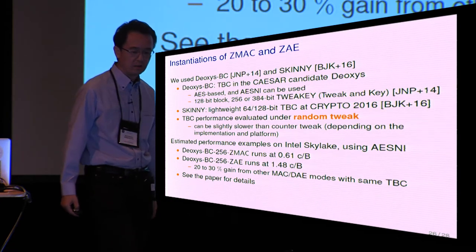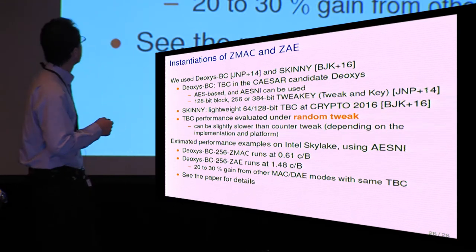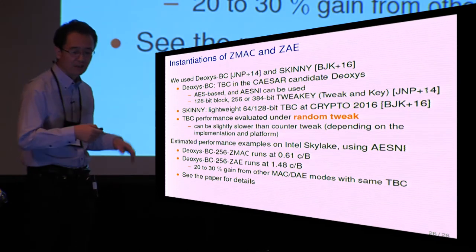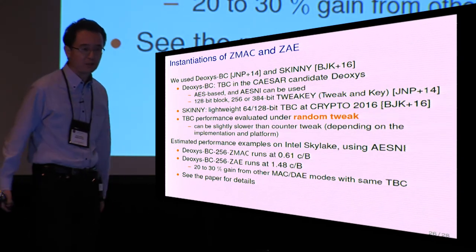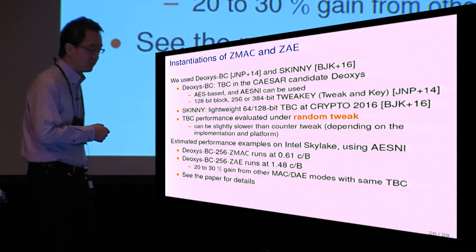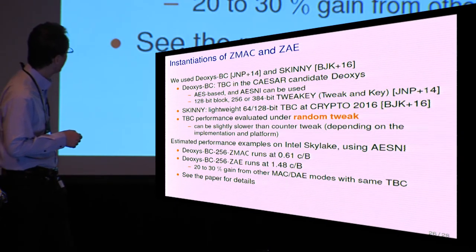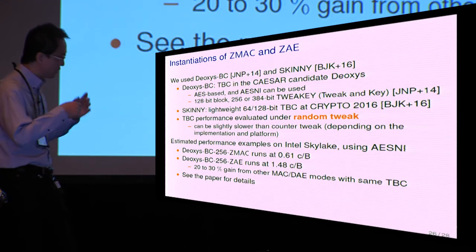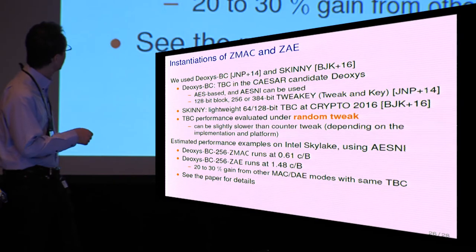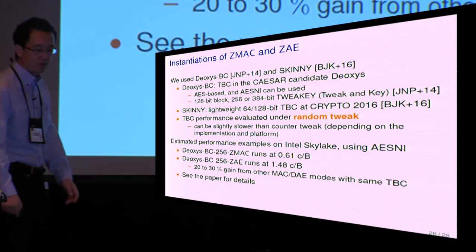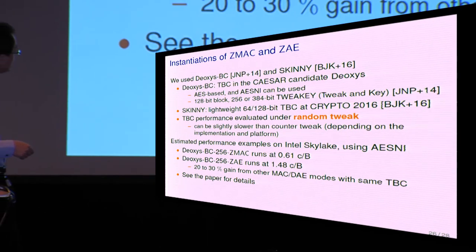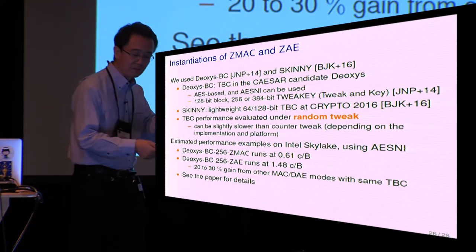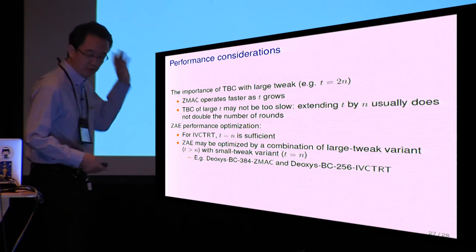We also instantiate ZMAC and ZAE using dedicated existing TBC. We choose Deoxys-BC and Skinny, where Deoxys-BC is a TBC in the CAESAR candidate Deoxys, which is essentially AES-based, and AES-NI can be used to have a very fast implementation on modern Intel and AMD platforms. And Skinny is a lightweight variant of the 64 or 128-bit block TBC introduced at Crypto last year. We evaluated TBC performance under random tweaks and estimated the performance of ZMAC and ZAE with this performance evaluation of the underlying TBC. For example, on Intel Skylake using AES-NI, the Deoxys-BC-based ZMAC runs at 1.61, and ZAE runs at 1.48 cycles per byte. And it shows some 20 to 30% gain from the MAC or DAE mode using the same TBC. See the paper for details.